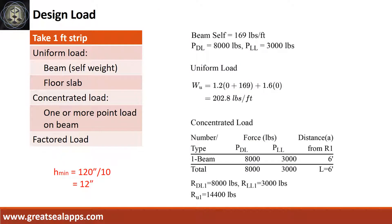The beam carries a concentrated dead load of 8,000 pounds and a concentrated live load of 3,000 pounds at edge of beam. The beam's self-weight is 169 pounds per foot for a factored uniform load of 202.8 pounds per foot.